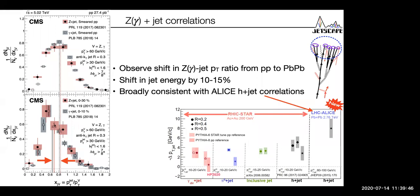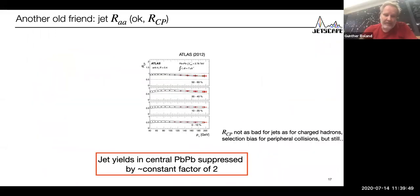Let's look at another observable, jet RAA, which is just the ratio of the yield of jets as a function of PT in heavy ion collisions to the yield in proton-proton collisions multiplied by the number of binary collisions to make them comparable. If you go to central collisions, there's a huge suppression in this yield. But this huge suppression of a factor of two corresponds to that shift by 10, 15% of energy out of the cone.